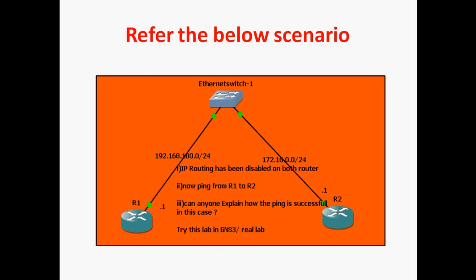Here, R1 to Layer 2 switch is a different network and R2 to Layer 2 switch is a different network — both are different networks. Normally to communicate between networks we use a router or Layer 3 switch. However, R1 and R2 are both connecting to a single Layer 2 switch, and both of them come under the same broadcast domain. When R1 tries to ping R2 at 172.16.0.1, it checks whether the MAC address is known. It doesn't know it, so R1 immediately generates an ARP packet. In that ARP packet, source IP is 192.168.100.1 and destination IP is 172.16.0.1, and source MAC address is the R1 router FA0/0 interface MAC address.